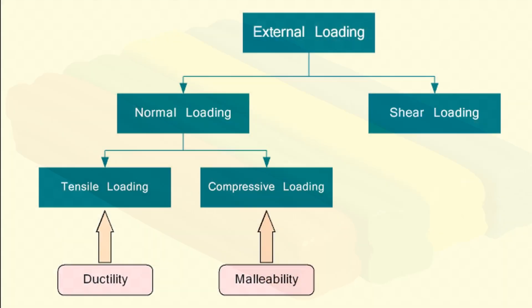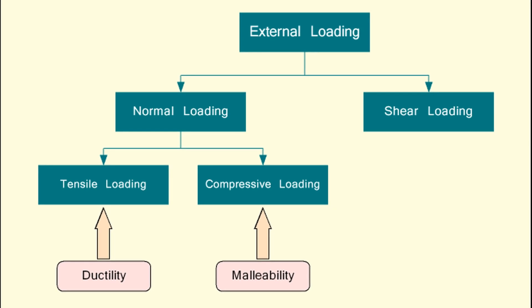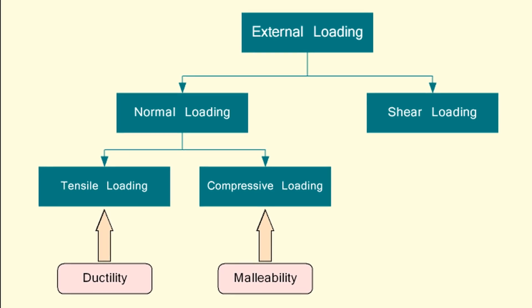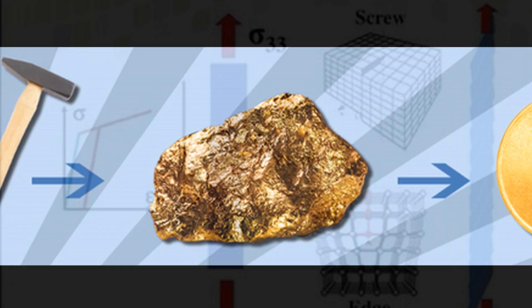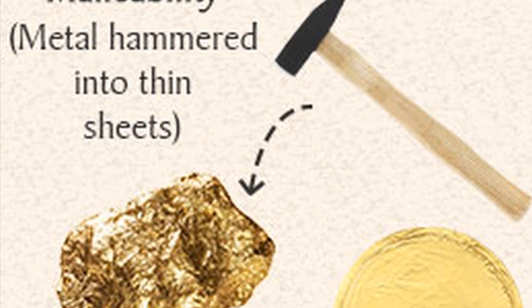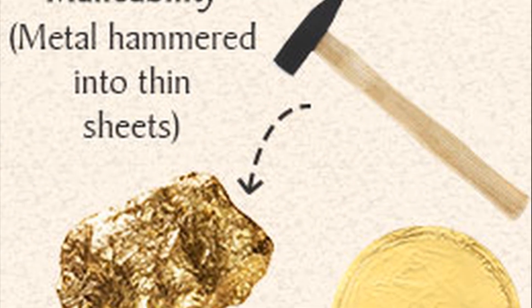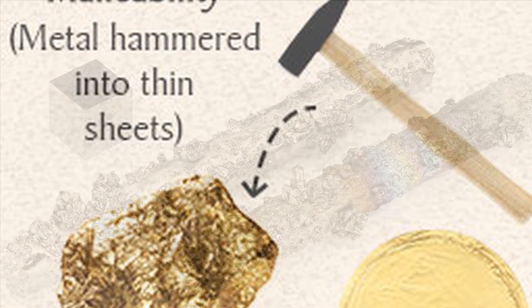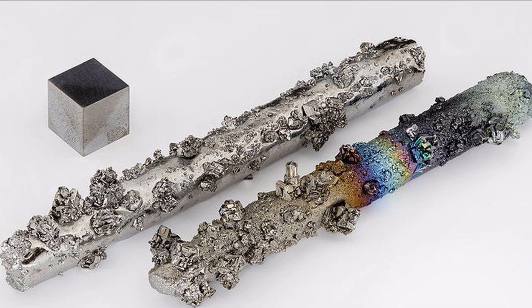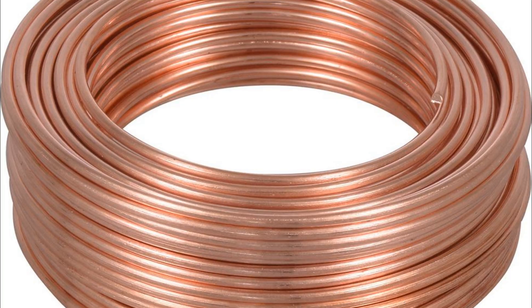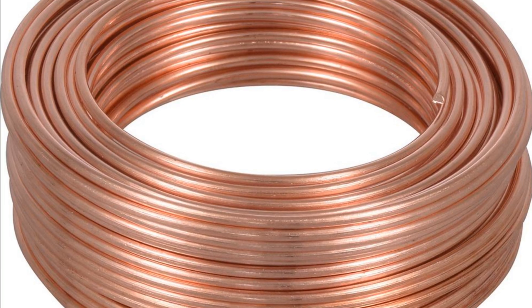e.g. clay, dough and plasticine. Malleability and ductility are also examples of plasticity shown by certain solids. Malleability: It is the ability of certain solids to withstand hammering and be beaten into sheets. Gold and silver are among the most malleable.